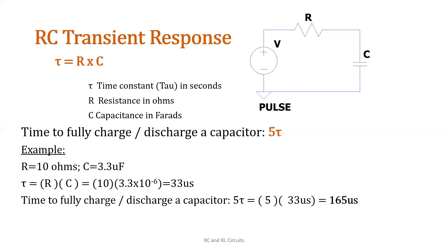The time to fully charge or discharge a capacitor is equal to 5 times the time constant. So 5 times 33 microseconds is equal to 165 microseconds. That is the time to fully charge or discharge.